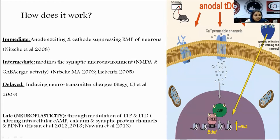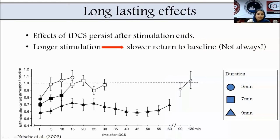The neurotransmitters and mechanisms involved include cyclic AMP, calcium, synaptic protein channels, and brain-derived neurotransmitters along with increased mRNA and protein synthesis. Effects of tDCS persist after stimulation ends, and longer stimulation shows a slower return to baseline.